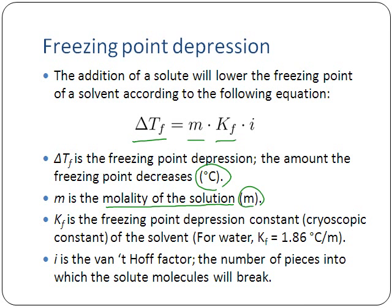Kf is a constant called the freezing point depression constant - sometimes you'll hear the more technical term 'cryoscopic constant,' but they're exactly the same thing. It's the freezing point depression constant of the solvent, so the key thing is remembering it's about the solvent - nothing to do with the solute. Different solvents have different values of Kf. For water, Kf is 1.86 degrees Celsius per molal, no matter what solute we mix in. A different solvent like alcohol would have a different value.